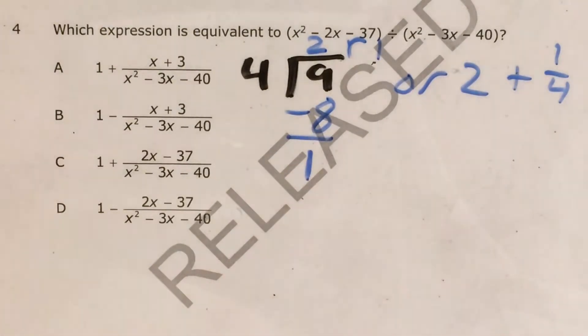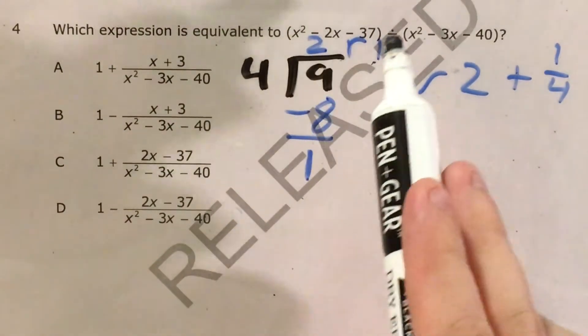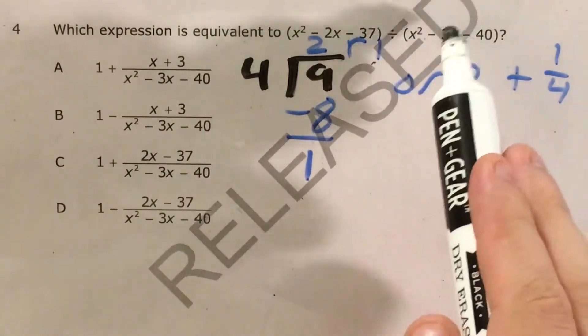Now I'm going to use almost the exact same process with quadratics. There's going to be a couple of tweaks that I'll need to go over. And of course it's polynomial, so it's going to be super tricky, but essentially if I'm trying to figure out x squared minus two x minus 37 divided by x squared minus three x minus 40,